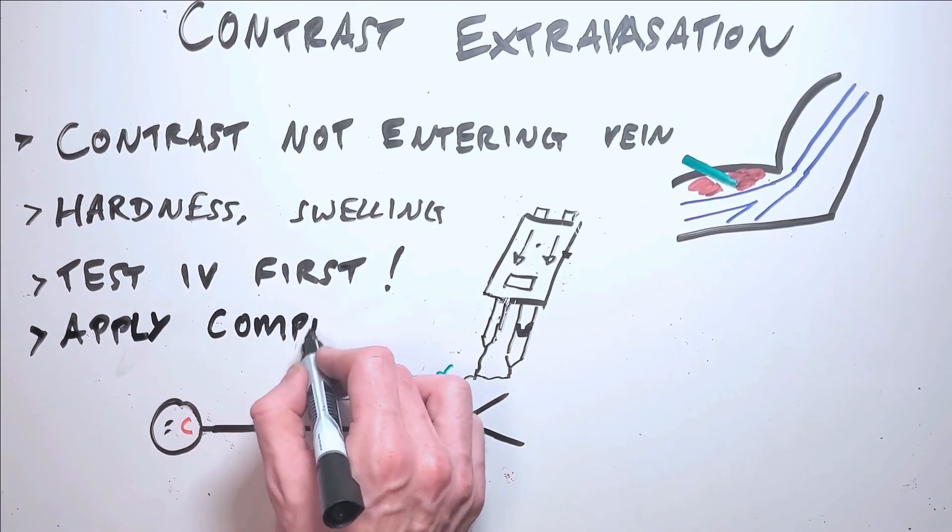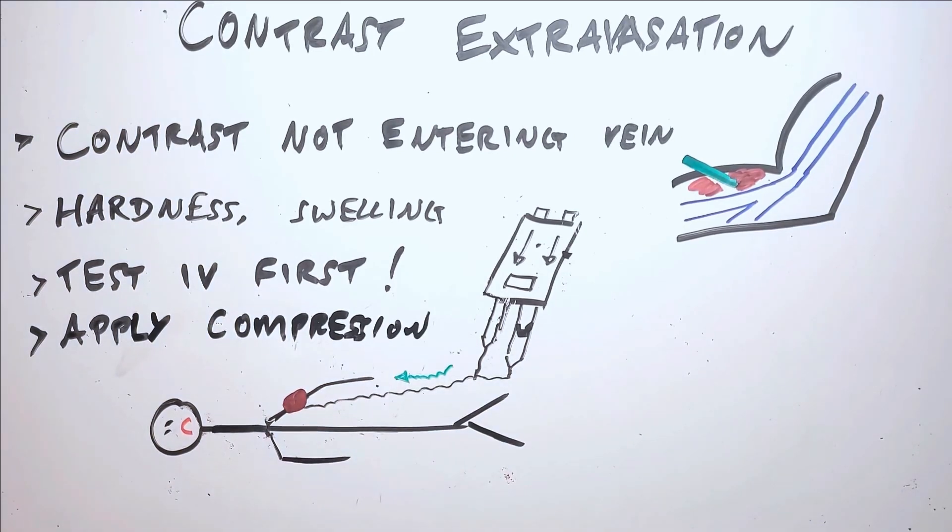If it does happen, the patient should be advised to apply compression at the site, and in most cases, the contrast will be absorbed and eliminated. In rare occurrences, contrast extravasation can lead to further complications at the site, such as compartment syndrome where the swelling causes impairment of blood flow. If extravasation is actively occurring, the injection should be stopped immediately, and the technologist will often have to find an alternative IV site and repeat the injection to acquire the scan.